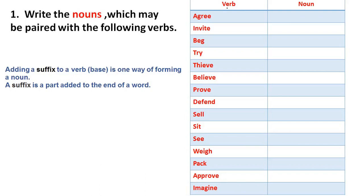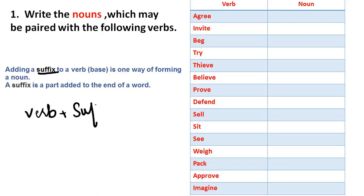Adding suffixes to the verb is one way of forming a noun. If you put the suffix at the end of the verb, then you will create a noun. You will write a verb and add suffixes to the verb, and when you add suffixes to the verb, it will convert to a noun.